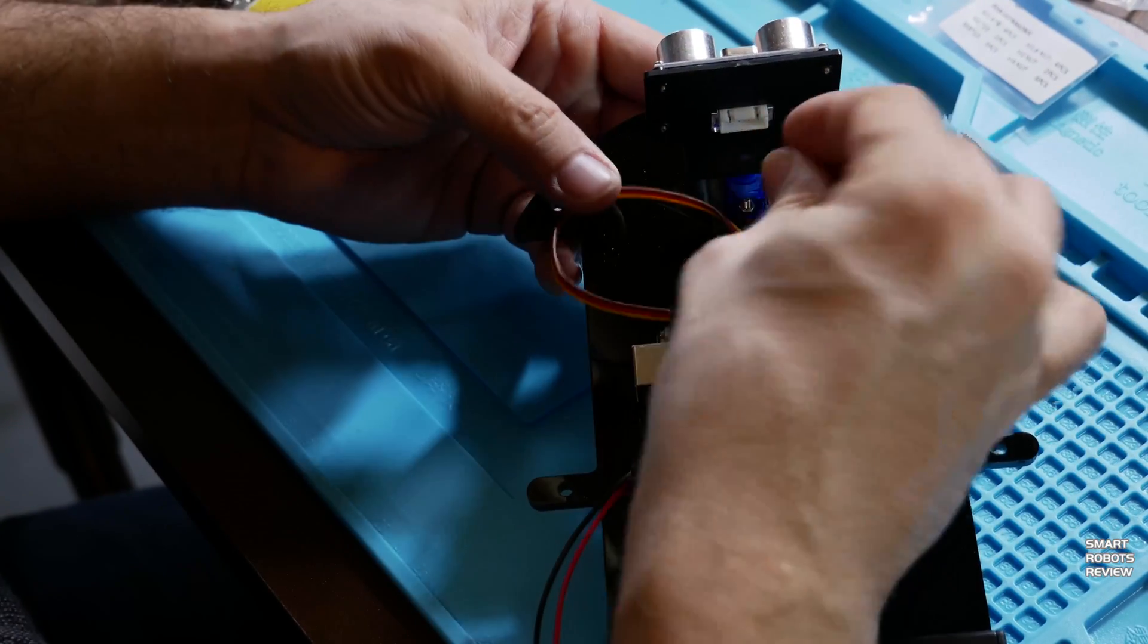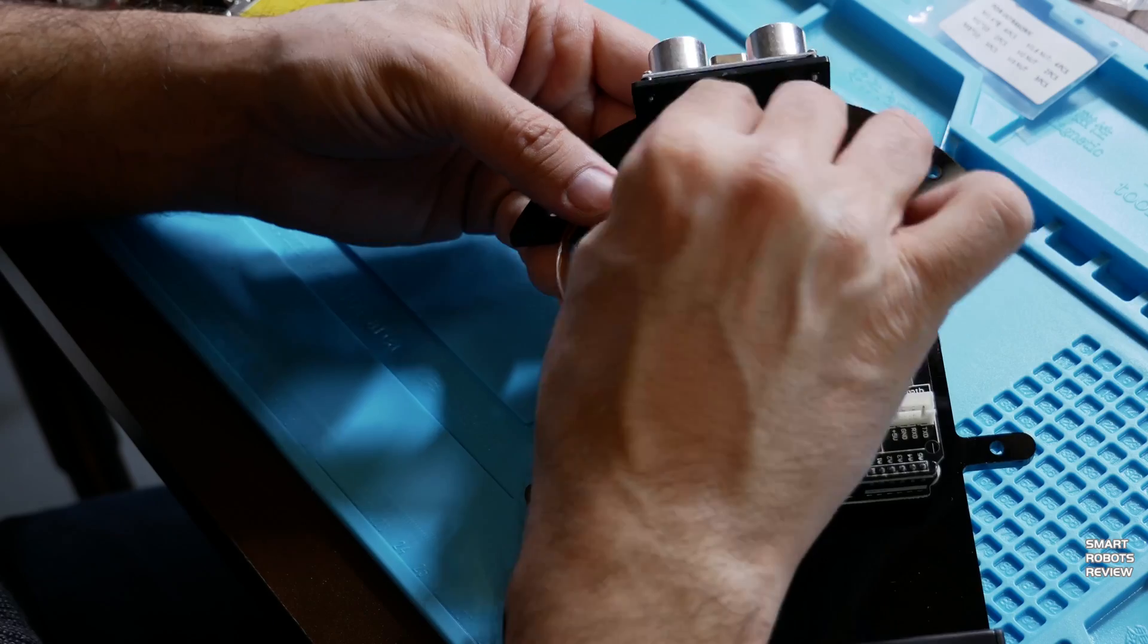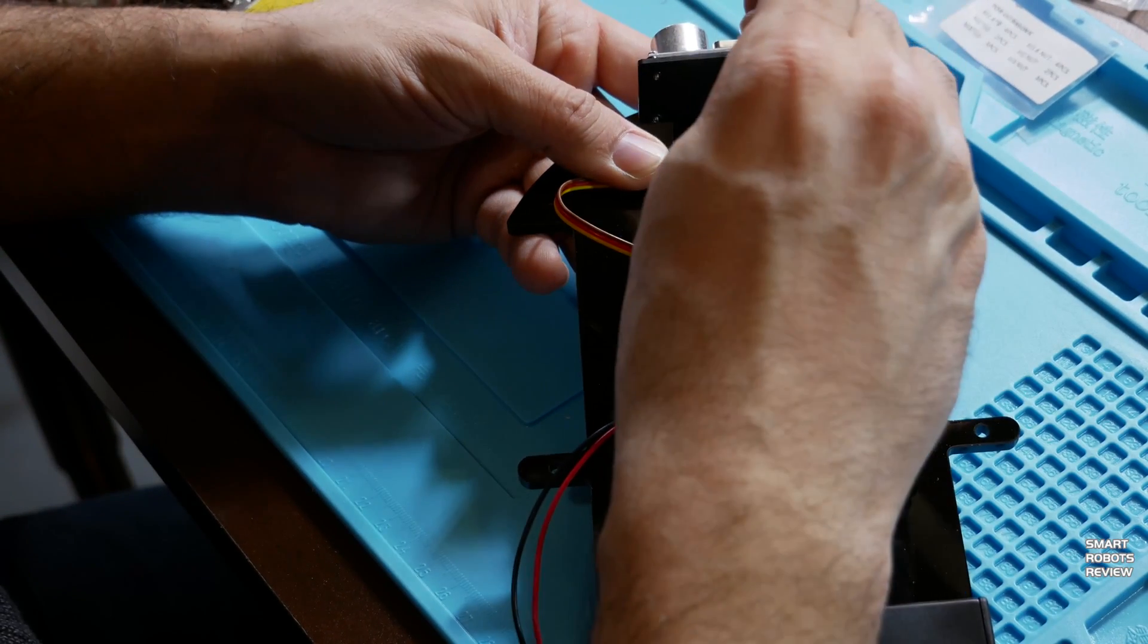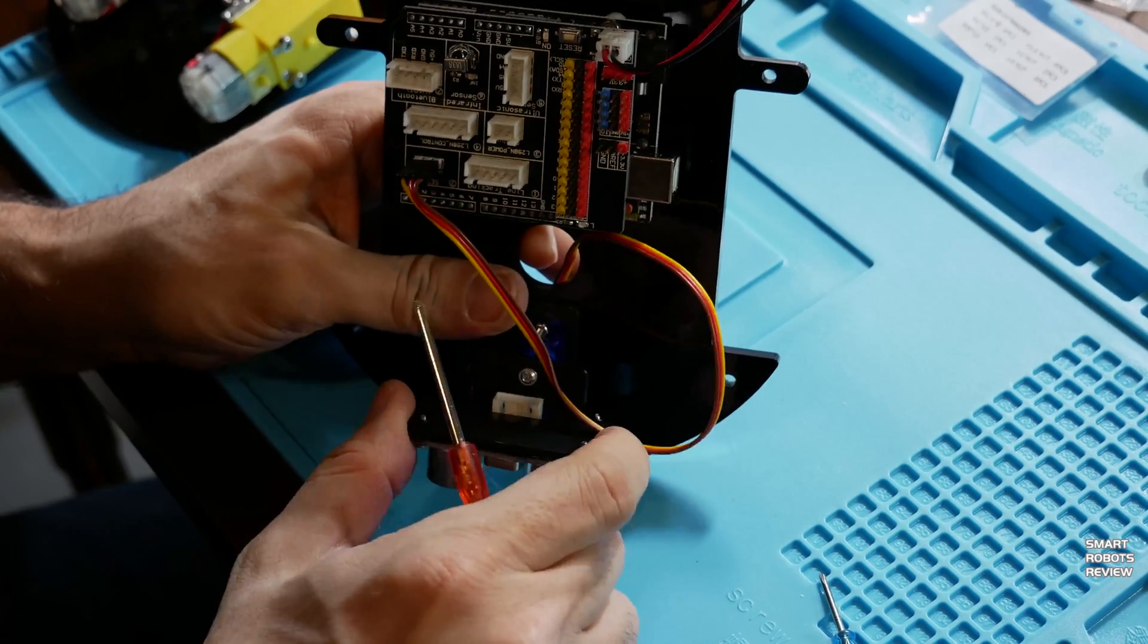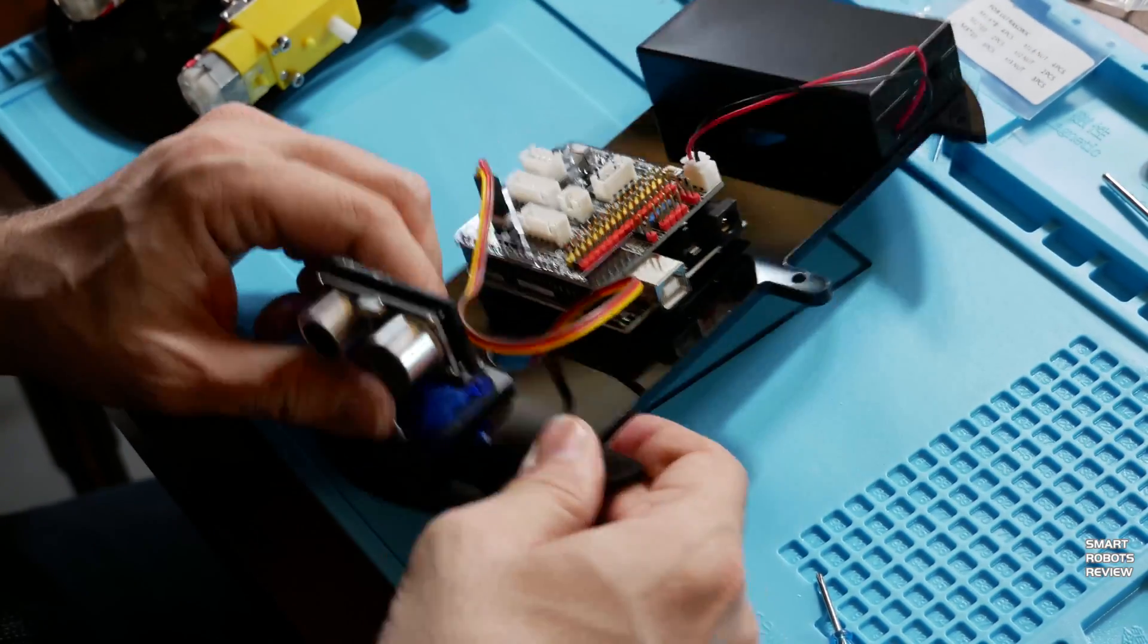And when we actually get to this and program the sensor, the robot will be able to rotate this sensor 180 degrees.